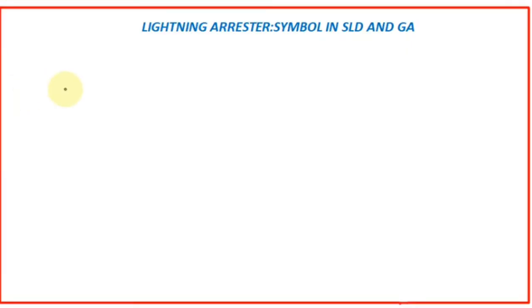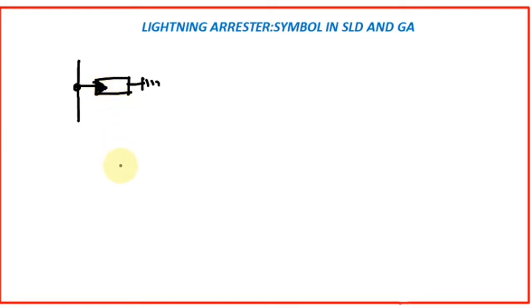First we will see how the lightning arrestor is indicated in a single line diagram. Suppose this is a line — we will indicate the lightning arrestor like this. So this is the symbol for lightning arrestor. The lightning arrestor is connected to each line and the other terminal of the arrestor is connected to the ground.